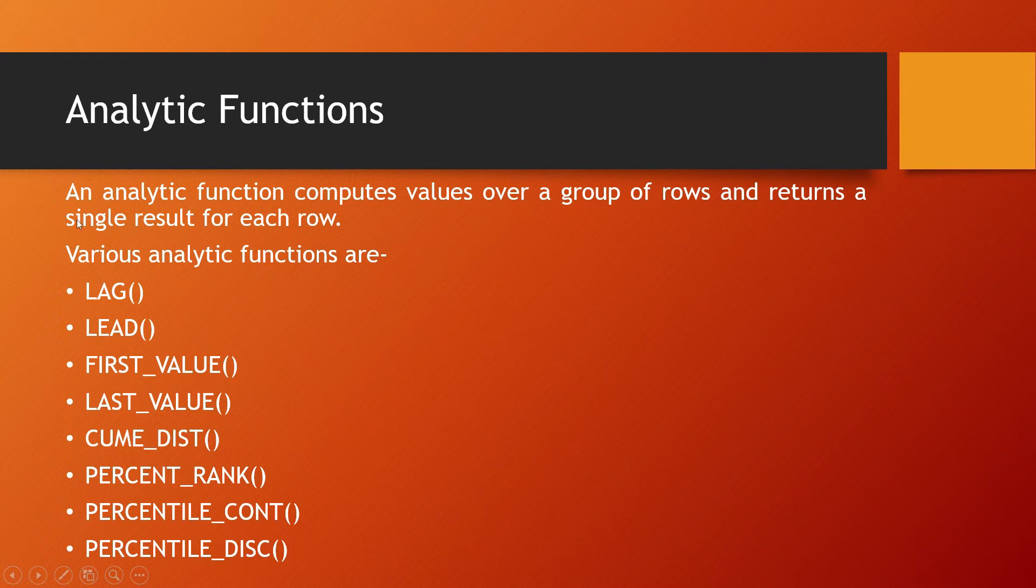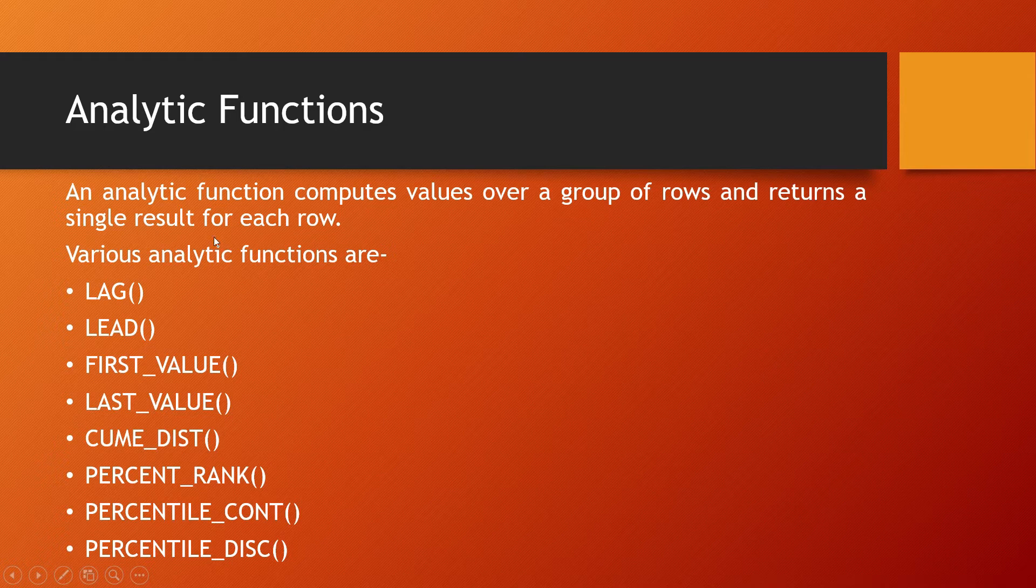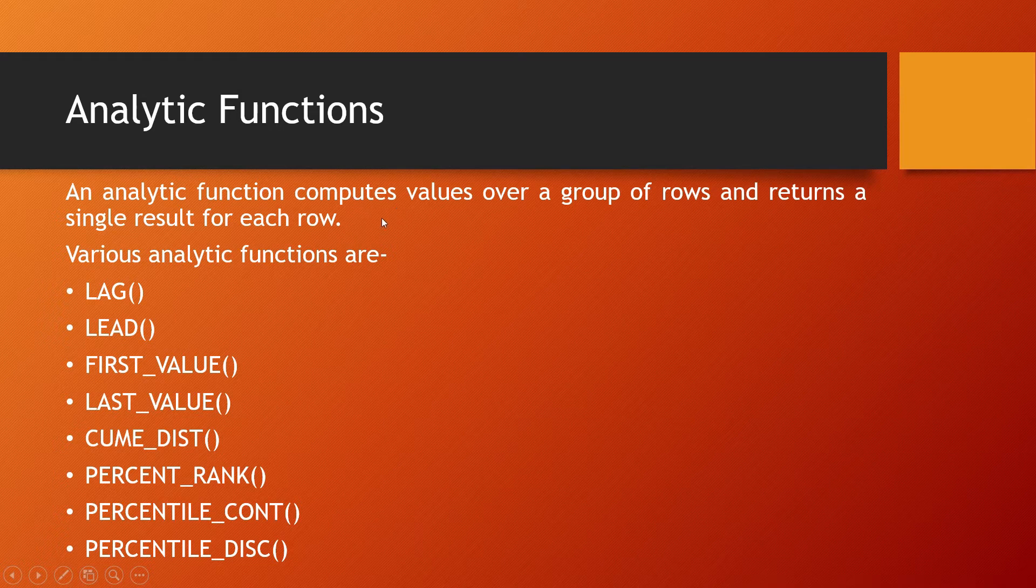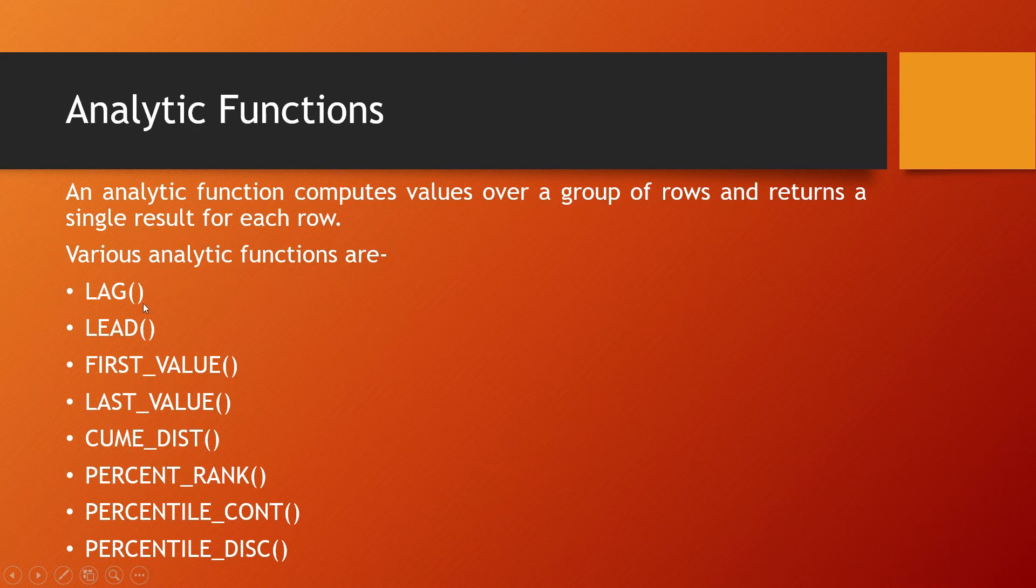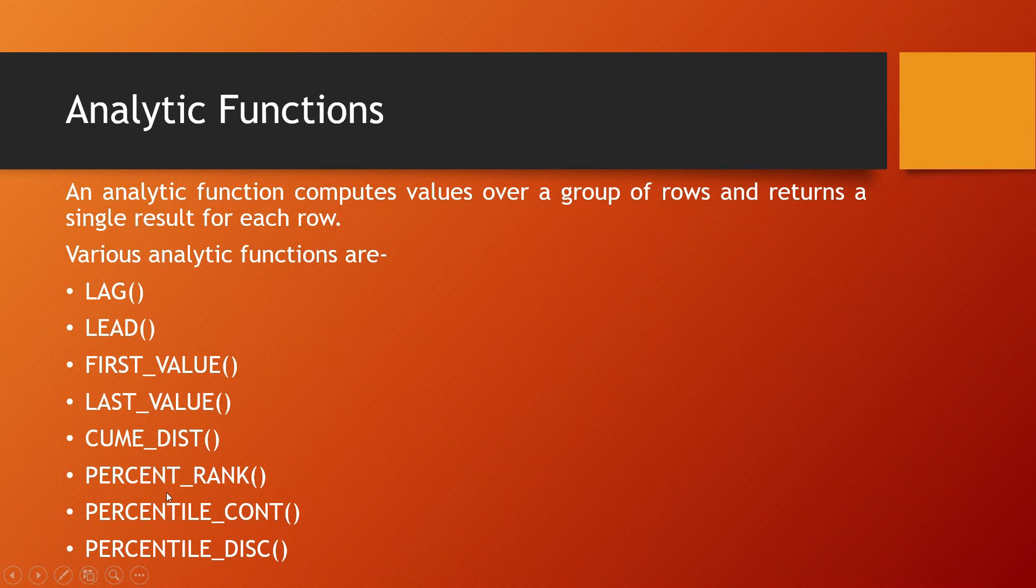Analytic functions. An analytic function computes values over a group of rows and returns a single result for each row. As I told you before, analytic and ranking functions work in a way that they return a value for each row or record in the table. So they compute values for a group of rows. Various analytic functions are: LAG, LEAD, FIRST_VALUE, LAST_VALUE, CUME_DIST, PERCENT_RANK, PERCENTILE_CONT, PERCENTILE_DISC.